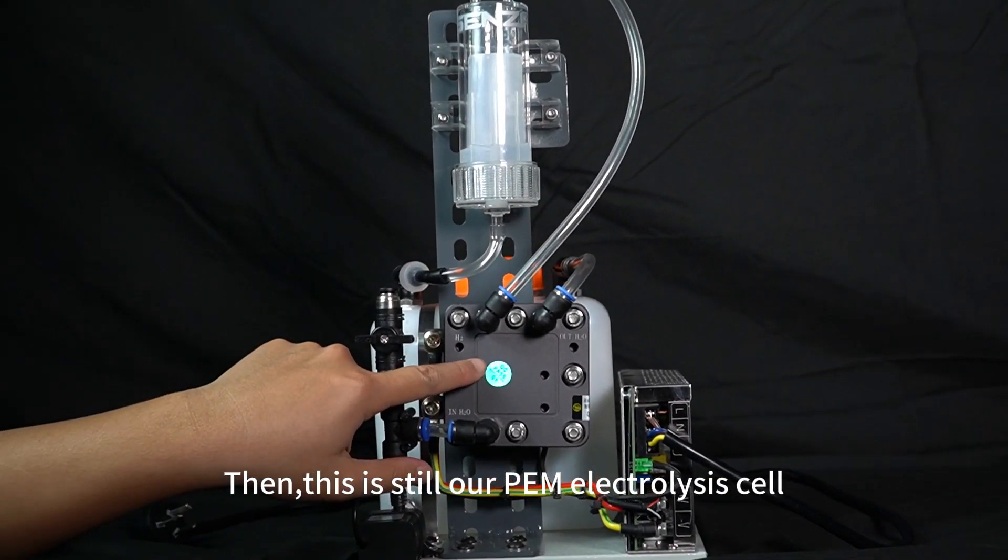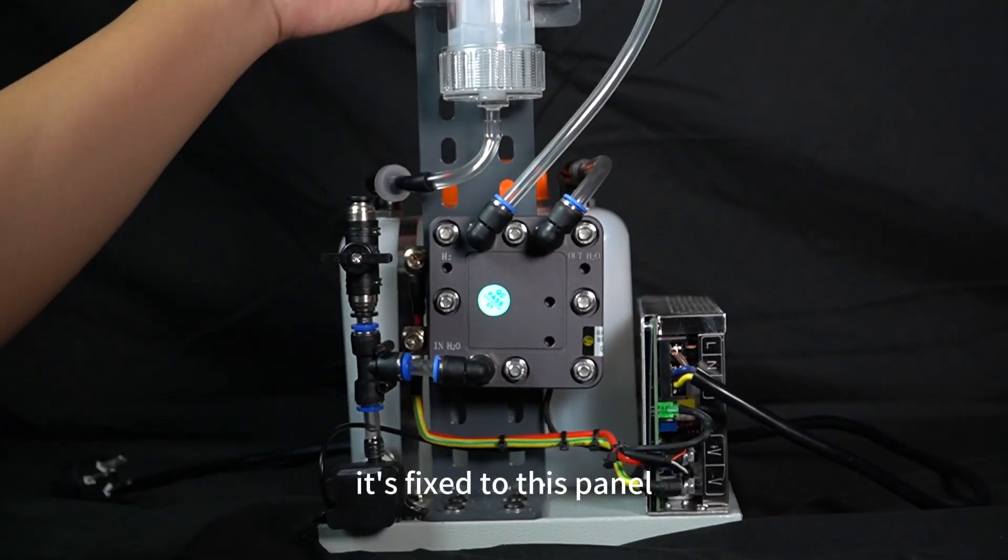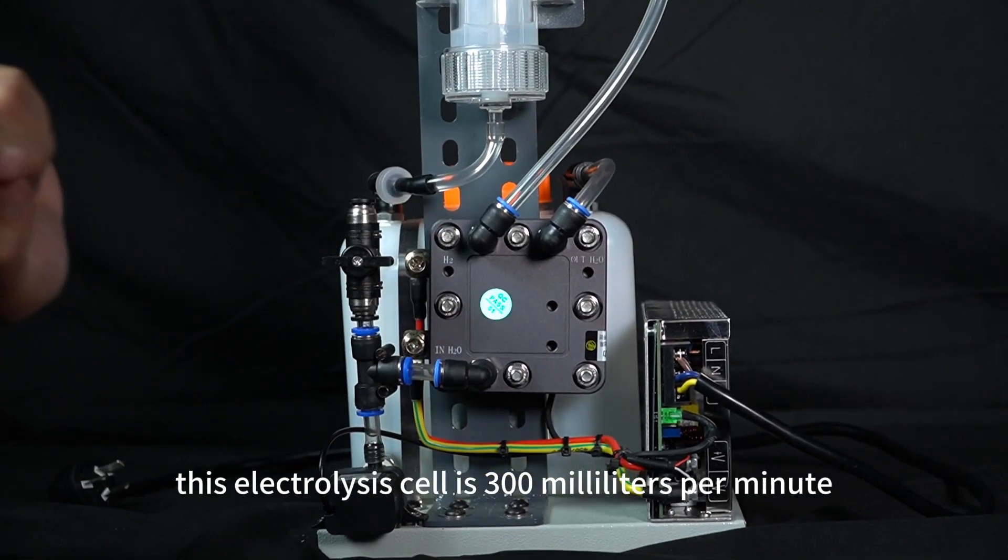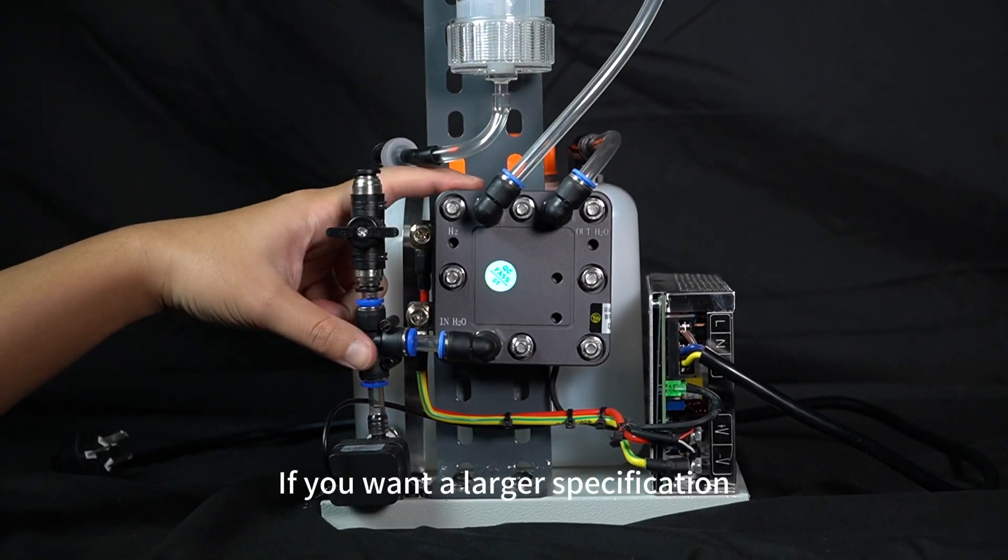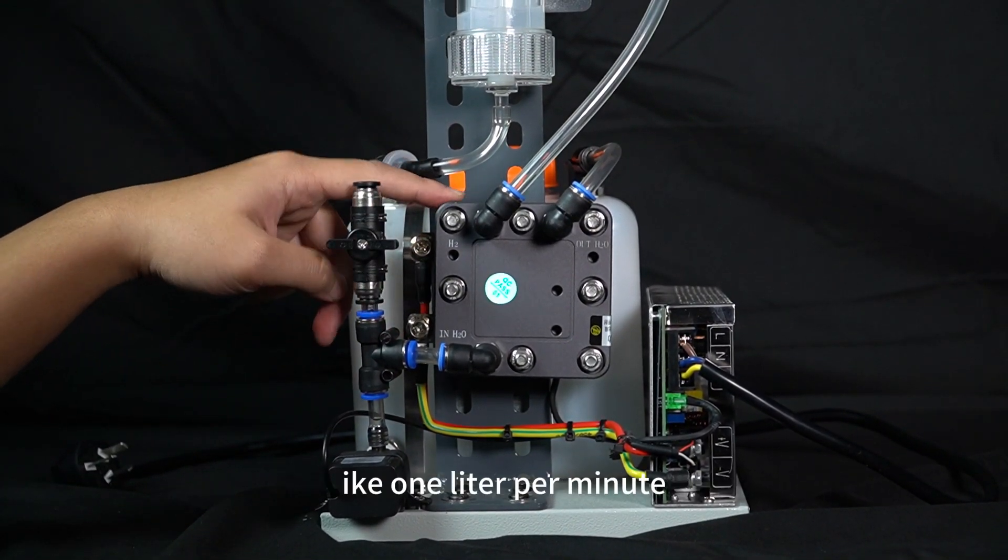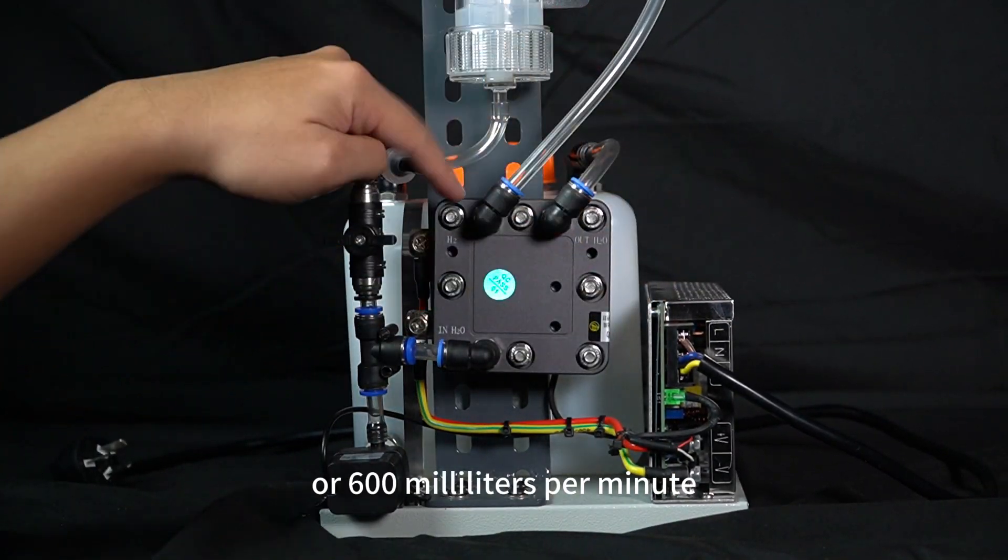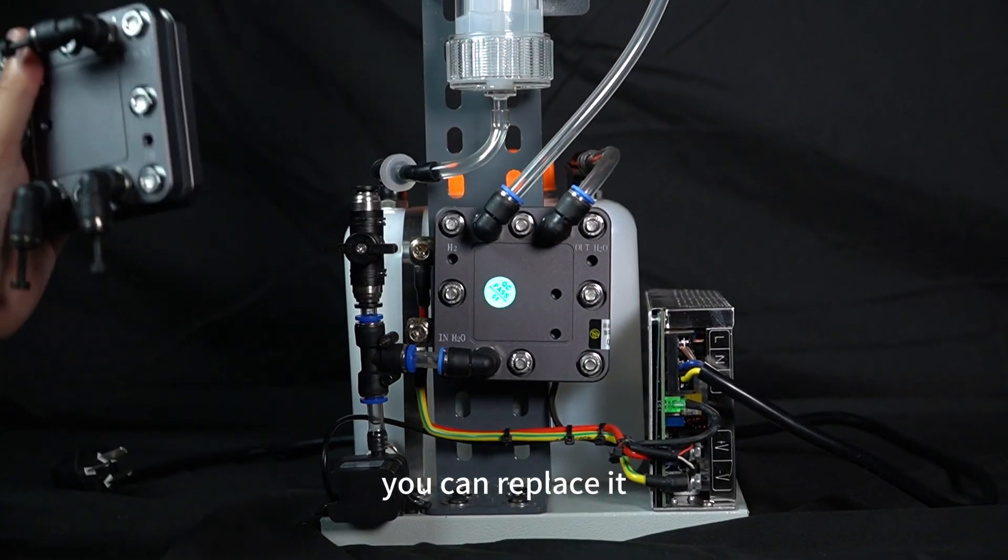This is still our PEM electrolysis cell. It's fixed to this panel, and its height can be adjusted. This electrolysis cell is 300 milliliters per minute. If you want a larger specification, like 1 liter per minute, or 2 liters per minute, or 600 milliliters per minute, you can replace it.